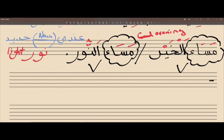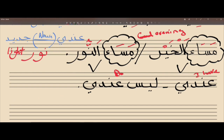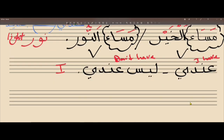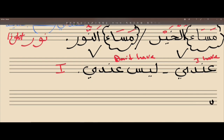عندي. Mumtaz. The next one - ليس عندي. Mumtaz. What does عندي mean, ya Emalia? I have. Jameel jidan. And what does ليس عندي mean? I don't have. Mumtaz. This is both for I. The last word - what is it? سؤال. Mumtaz. سؤال - what does سؤال mean? Question. Jameel.